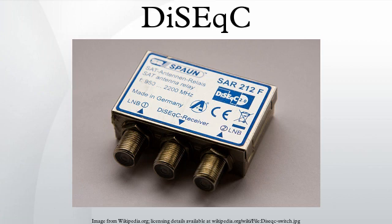The terms DiSEqC 1.3 and 2.3 are also often used by manufacturers and retailers to refer to the use of DiSEqC with other protocols. For example, 1.3 usually refers to a receiver which uses USALS in conjunction with the DiSEqC 1.2 protocol. Such terminology has not been authorized by Eutelsat.